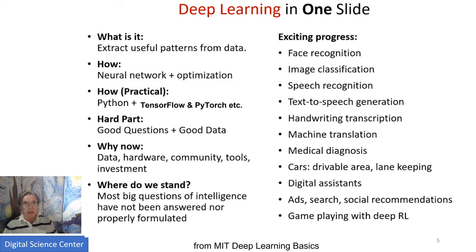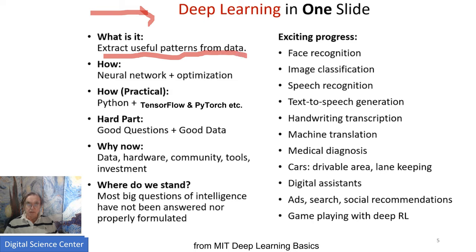Here is a slide taken from MIT which has deep learning in one slide. What does deep learning do? People emphasize it extracts patterns; it also does regression and calculates numbers. It uses optimization, and the technology it uses for building the optimization model is neural networks. The tools are Python plus TensorFlow and PyTorch — possibly MXNet, though that's not used as much.